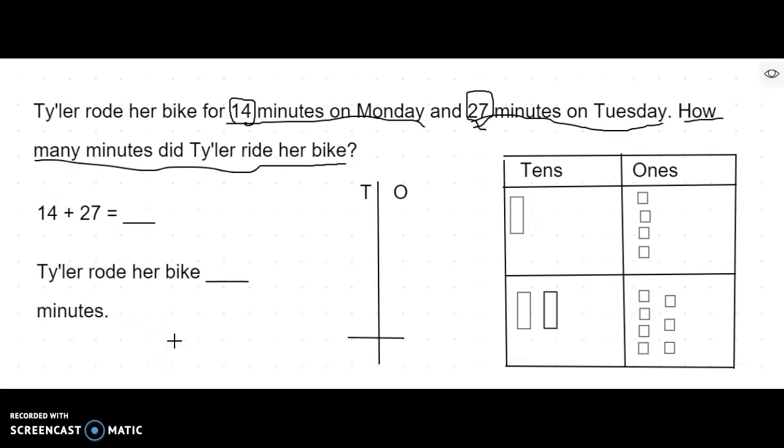Okay. So that's all set. Now I'm going to go ahead and solve the problem. So I've already set up my place value picture chart. I have one 10 and four ones on top for 14. And I have two 10s and seven ones on bottom for 27.